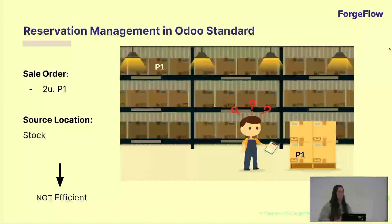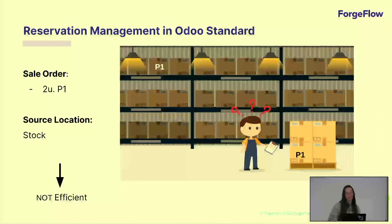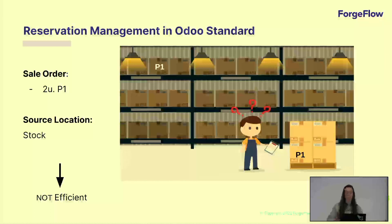What can happen is that since you cannot decide where Odoo reserves, you can have this PERC1 reserved in storage at the top of your rack or in a place that is not very reachable, and the picker will have to walk a long distance or lose a lot of time to take that product and fill that order. This means it's not a very efficient or flexible way, since you cannot decide how this is being reserved.